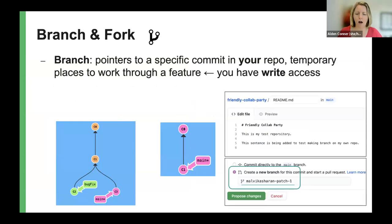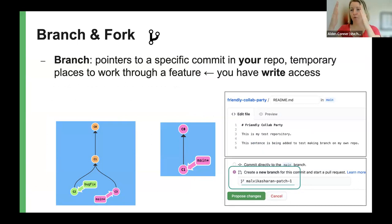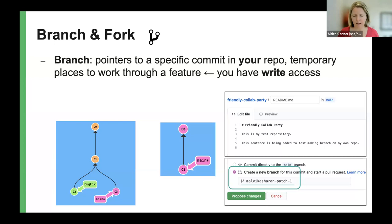Branching and forking: forking has been covered — creating your own copy of a repo. Branching happens within a fork: you create a branch to make changes to a specific part without affecting the whole repo. Branches are meant to be temporary — you do a piece of work in a branch, then merge it back into your fork, and then merge your fork into the main repository. In the upcoming demo, everyone will work off a branch.